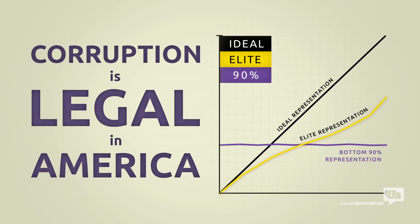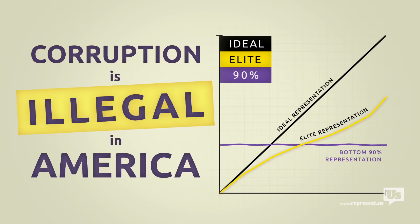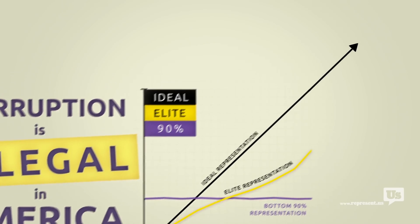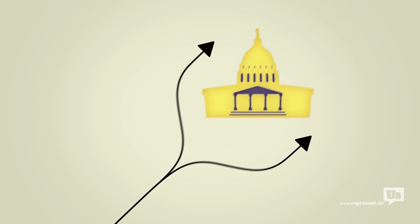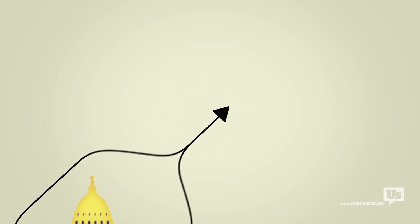Corruption is legal in America. And as long as it is, anyone who can spend money to buy political influence will. The solution here isn't rocket science. Make corruption illegal. We already know Congress won't do it. I mean, one look at this chart will tell you that. What we need is a plan that lets us go around Congress and do what the American people do best. Fix this mess ourselves.